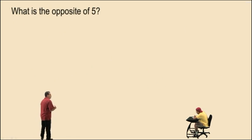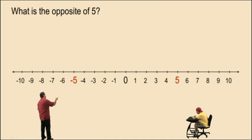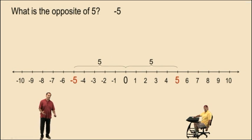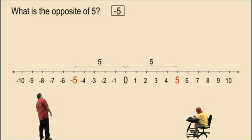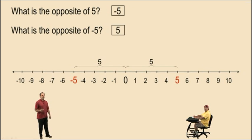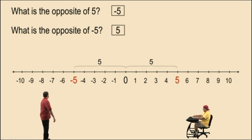So what is the opposite of positive 5? Positive 5 is 5 units to the right of 0. Charlie, what number is 5 units to the left of 0 on the number line? Negative 5. That's negative 5 — so negative 5 is the opposite of 5. Now, what is the opposite of negative 5? It is positive 5. Opposites of positive numbers will always be negative, and opposites of negative numbers will always be positive.